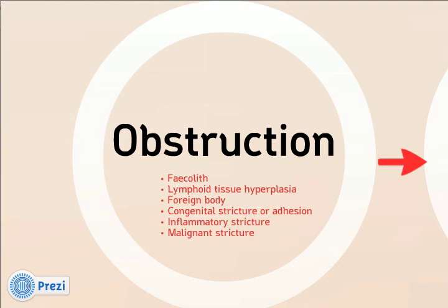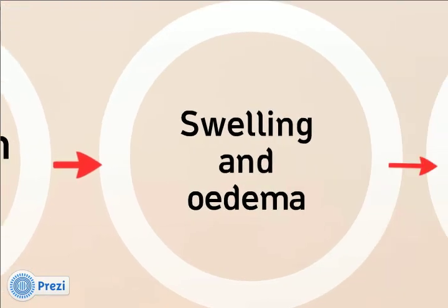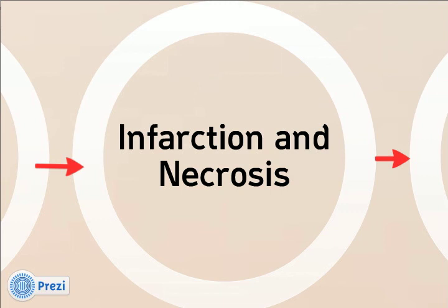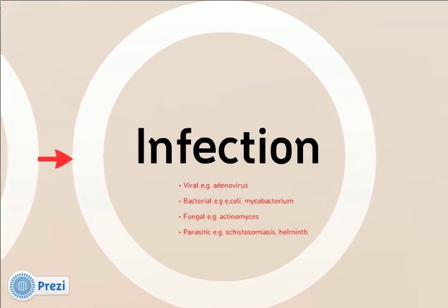The mechanism by which the appendix becomes inflamed is illustrated here. In the first instance, the lumen becomes obstructed, usually with a faecalith, but can be due to lymphoid hyperplasia, a foreign body, or a stricture of some kind. This obstruction results in swelling and oedema in the appendix, which subsequently results in infarction and necrosis.